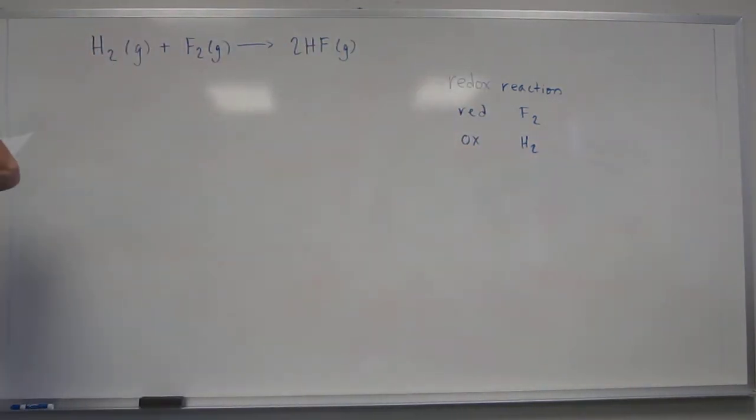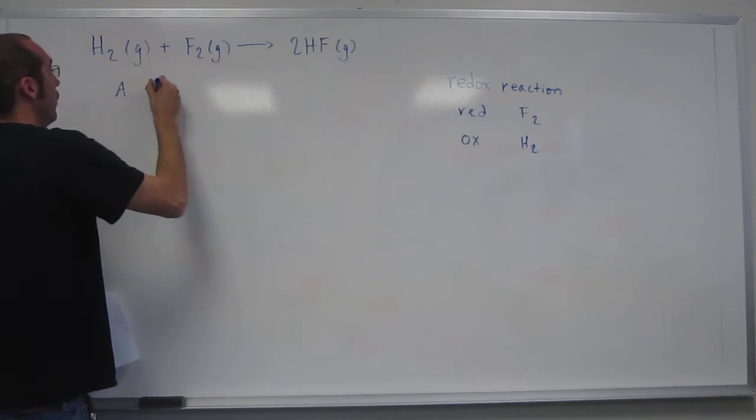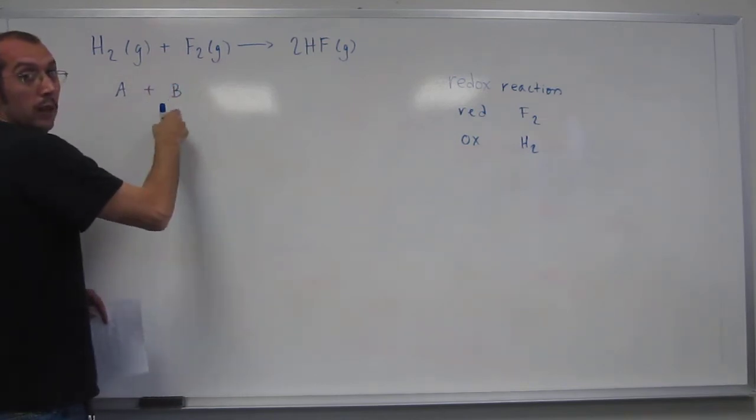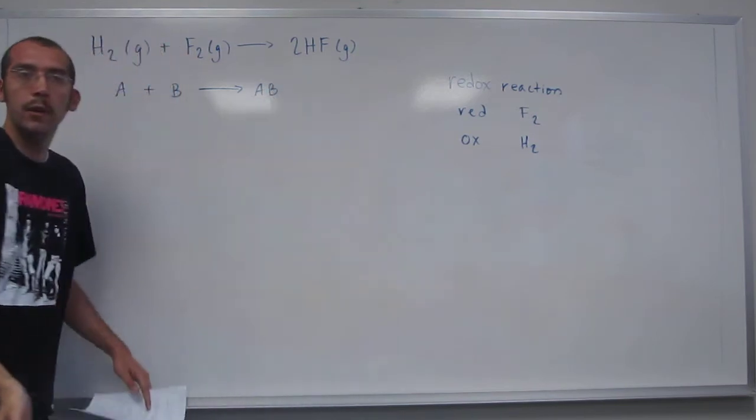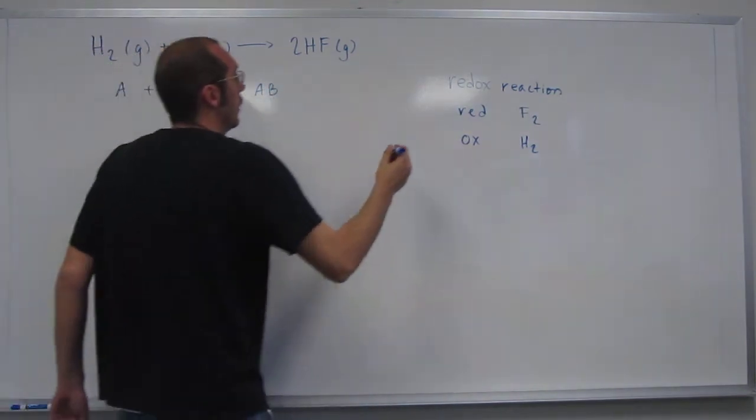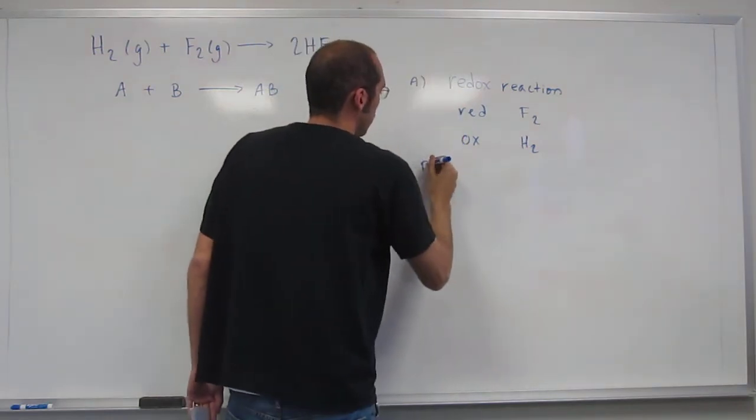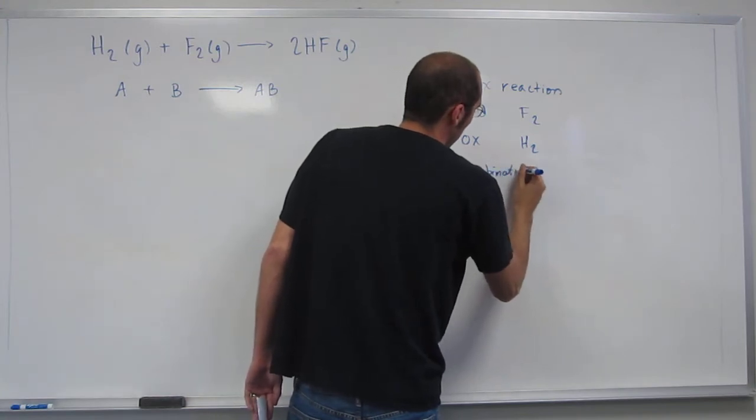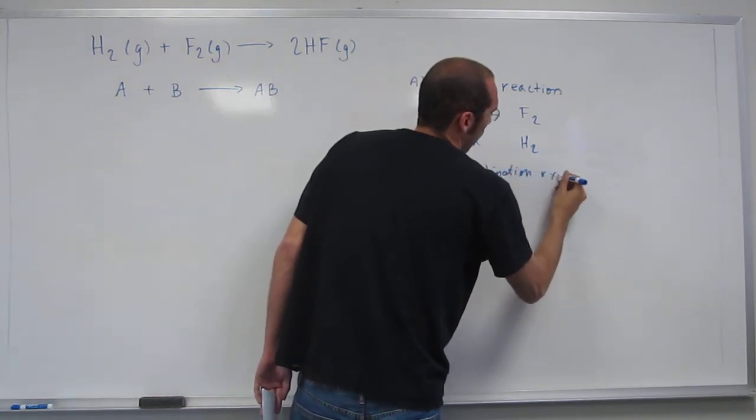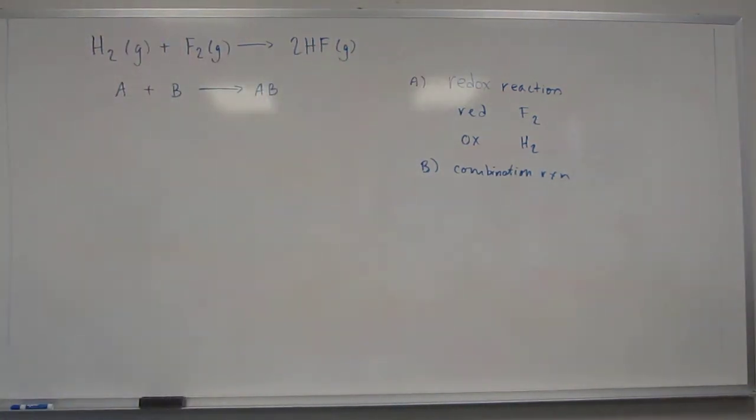Okay, so the next question is, it says, what's the type of chemical reaction? Well, you got two things, right? A plus B combining into AB, right? It's a combination. So that's a combination reaction. I don't know what these were, A or something like that. This would be B. It's a combination.